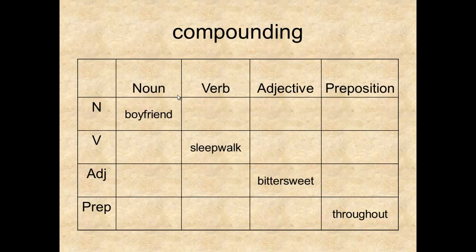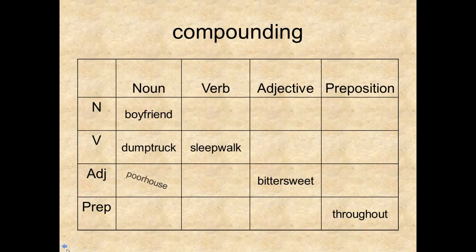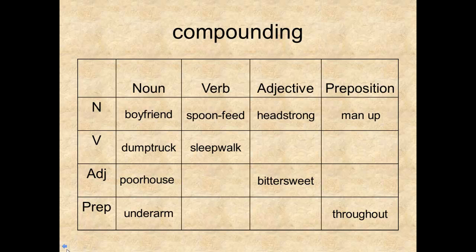Finally, let's take a look at a word-forming process that is quite productive in English: compounding. Compounding is when you take two free morphemes and combine them to make a new word. In English, we can mix and match word categories to produce quite an array of new words. Nouns can go with nouns, verbs with verbs, adjectives with adjectives, prepositions with prepositions, and all possible combinations. I'll leave it as an exercise for you to fill in the rest of the blanks in this chart.